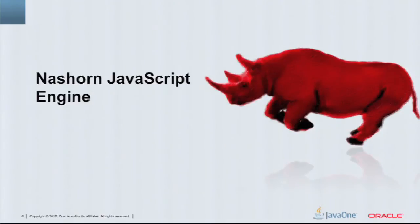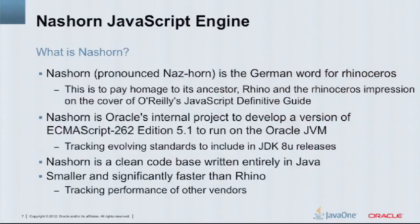This is the raging red rhino — it's sort of our unofficial logo. NASHORN is pronounced 'NASHORN', not 'NASHORN' or 'NASHORN'. This is to pay homage to its ancestor Rhino, which has been on the JVM for a long time.